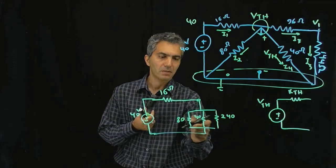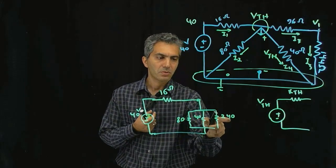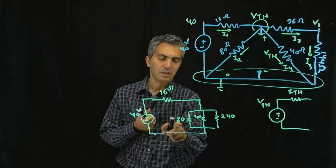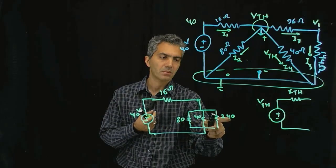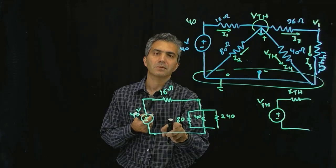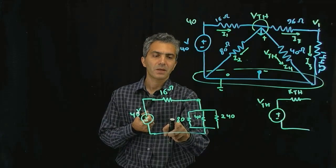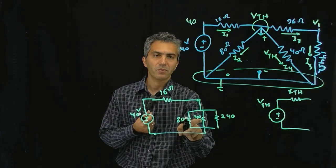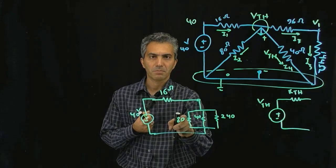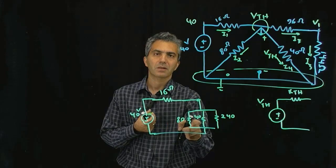To calculate these three in parallel, 240 in parallel with 80 is 240 times 80 divided by 240 plus 80 and that turns out to be 60. Then 60 in parallel with 40, that would be 60 times 40 divided by 60 plus 40 and that turns out to be 24.